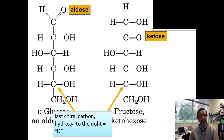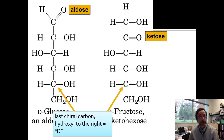Looking at rule number two: the last chiral carbon — if the hydroxyl is to the right, that means D; to the left means L. We can see that both glucose and fructose are D sugars. Most natural sugars — glucose, fructose, ribose, and others — are going to be D sugars. It's the same kind of handedness you see in amino acids; this is just how it shows up in sugars.